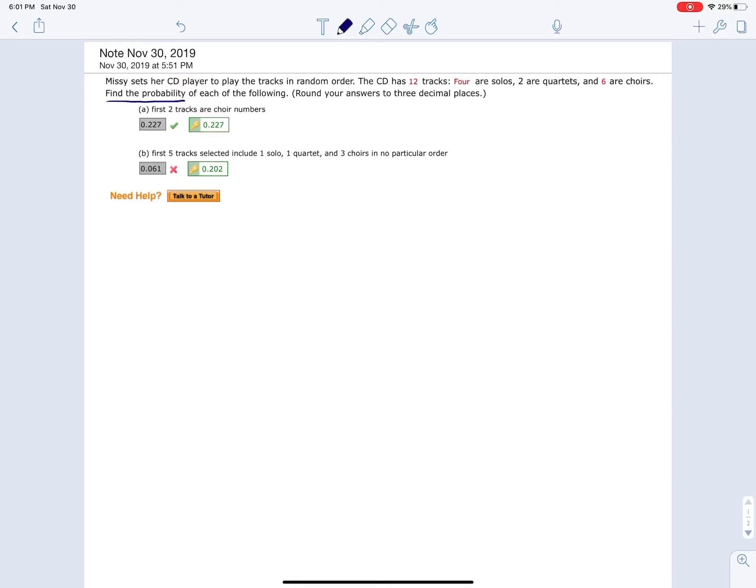Find the probability, part A, that the first two tracks are choir members. So in part A, let's see, the first two tracks are choir.